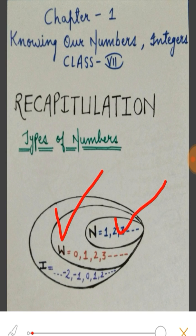A set of numbers which comprises all positive numbers and all negative numbers including 0 is called Integers. It is denoted by I. For example, minus 2, minus 1, 0, positive 1, positive 2 and so on.